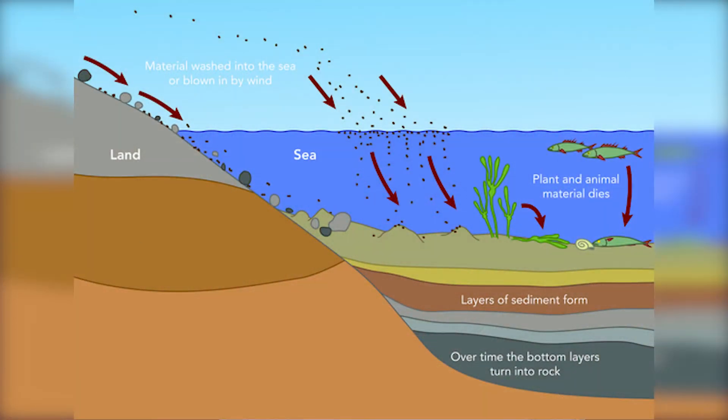Phosphorus returns to the cycle via waste and decomposition when plants and animals die. When phosphorus-containing compounds from the bodies or wastes of marine organisms sink to the floor of the ocean, they form new sedimentary layers. This sedimentary rock may be moved from the ocean to the land by a geological process called uplift. However, this process is also really slow, and the average phosphate ion has an oceanic residence time of 20,000 to 100,000 years.